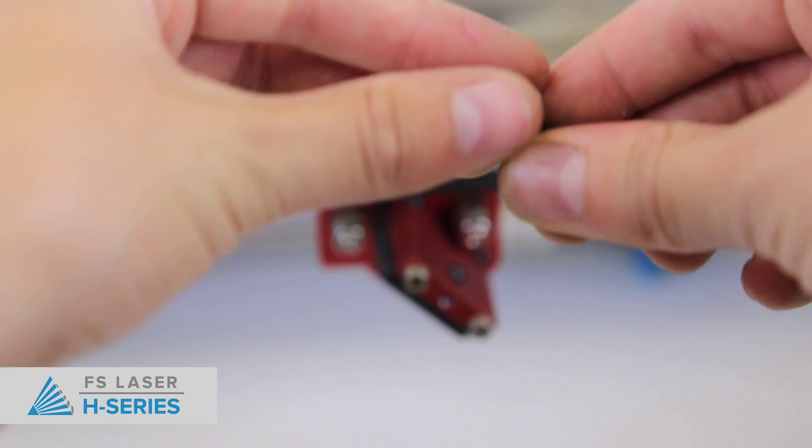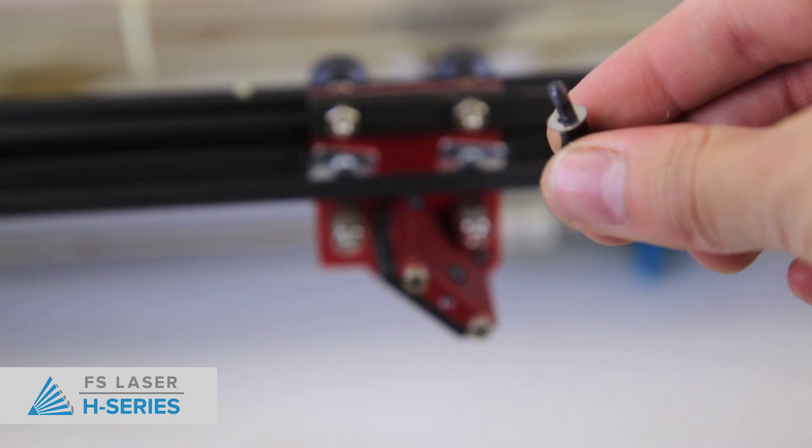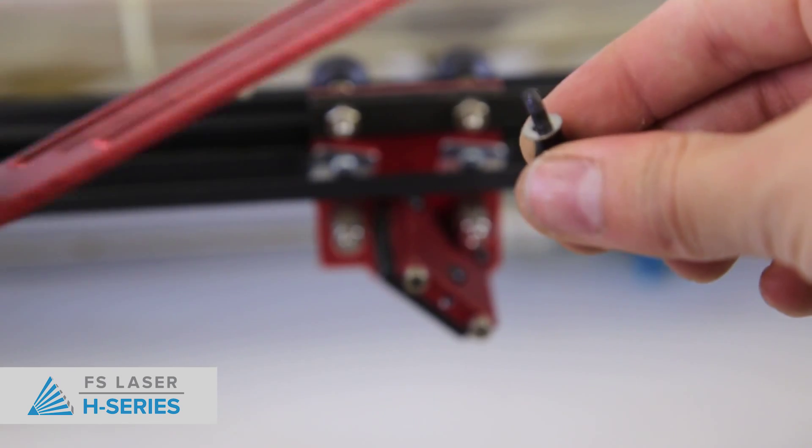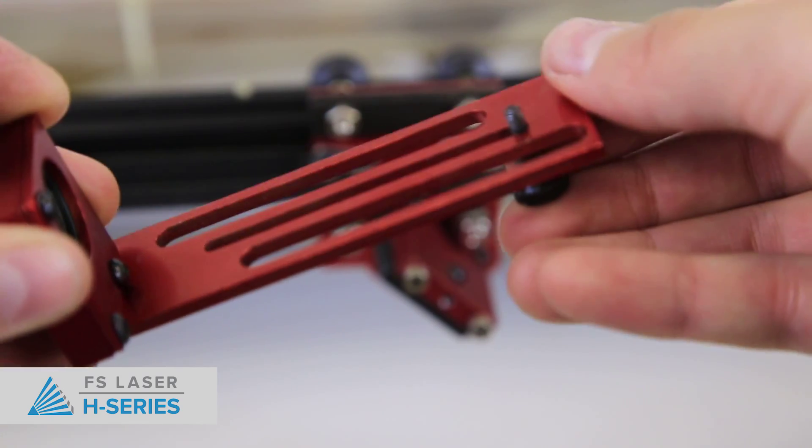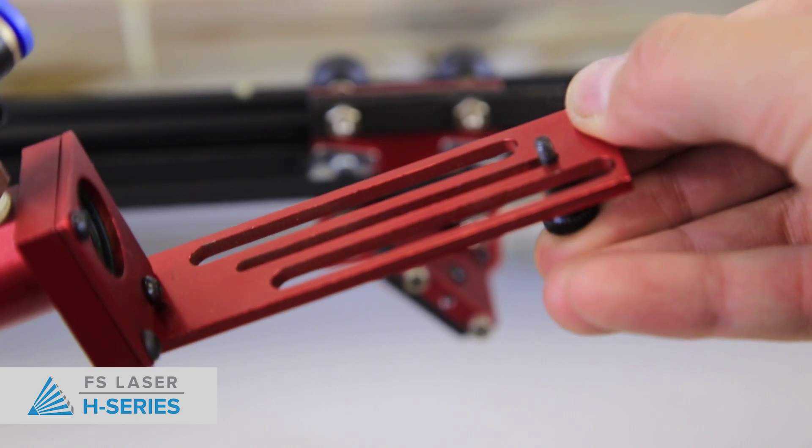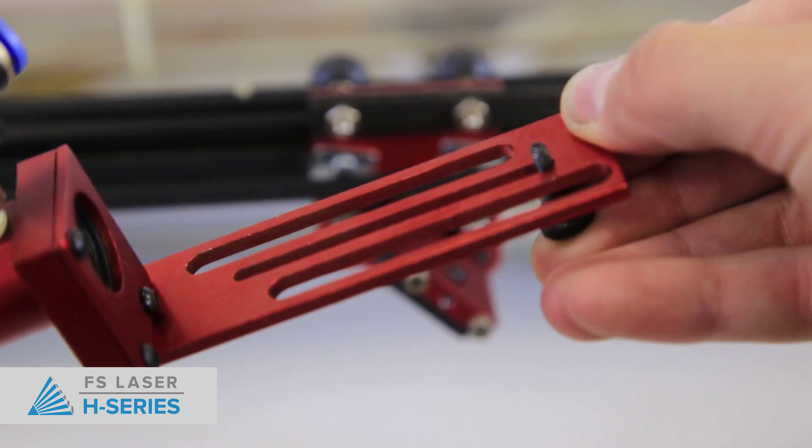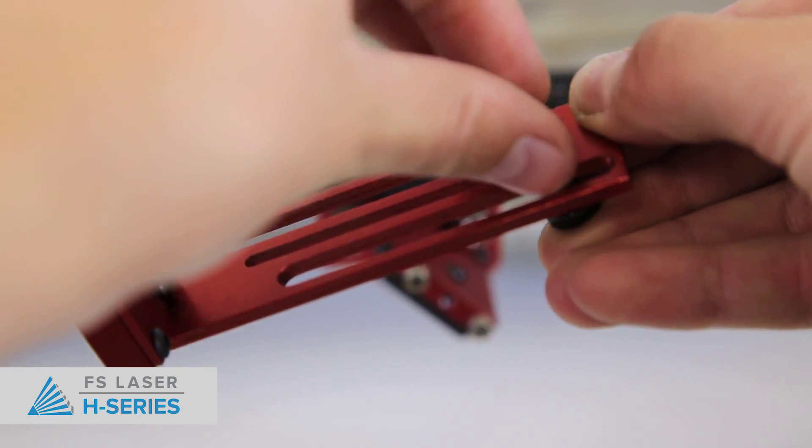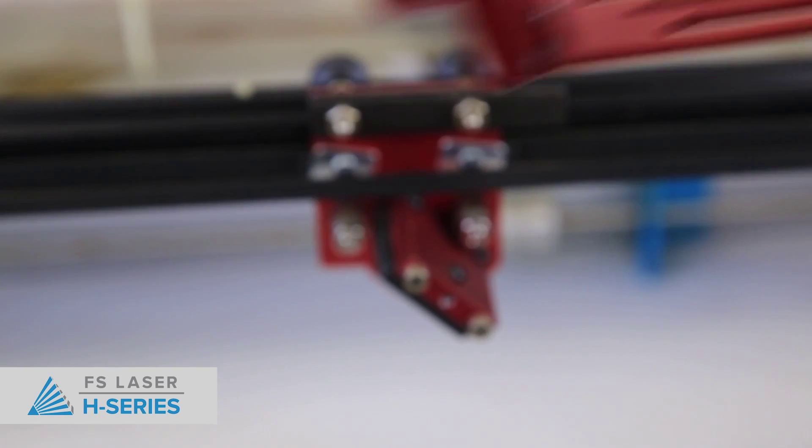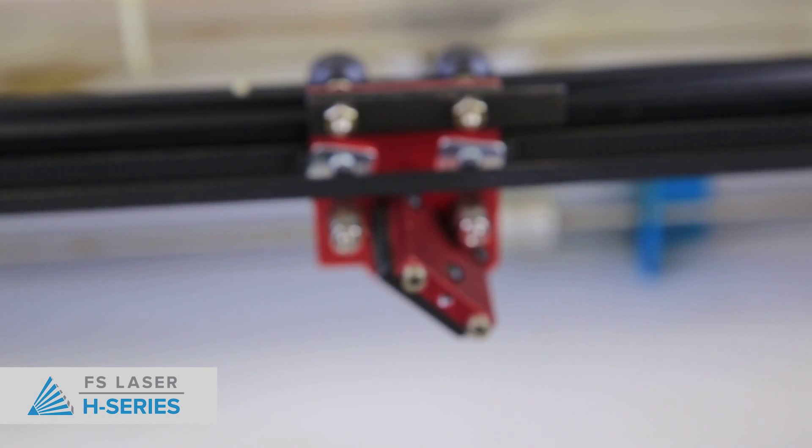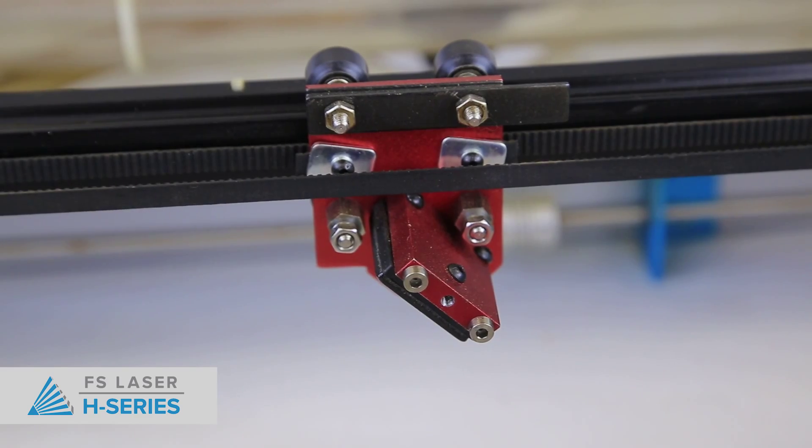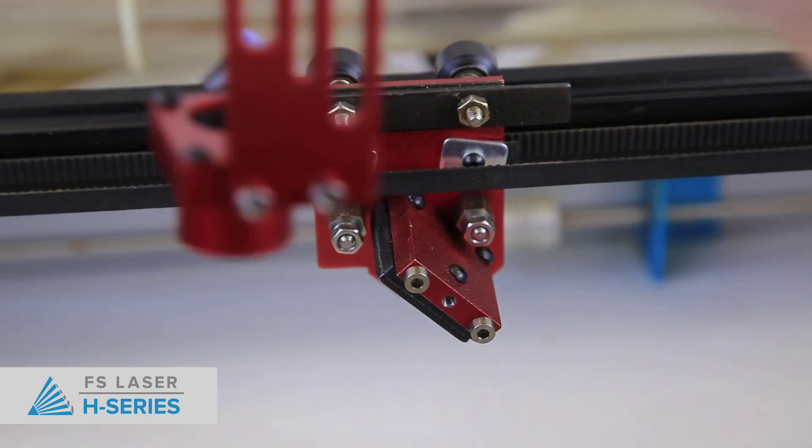Take the thumb screw and then add the first washer, then the focus lens assembly, and then the second washer. Secure the assembly to the rail.